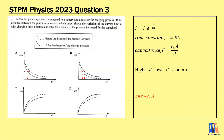Last question on this topic from 2023: a parallel plate capacitor is connected to a battery and a resistor for a charging process. If the distance between the plates is increased, which graph shows the ratio of current flow with charging time before and after the distance is increased? For current, it is a decreasing pattern whether charging or discharging, so the answer is either A or B. The time constant is RC.